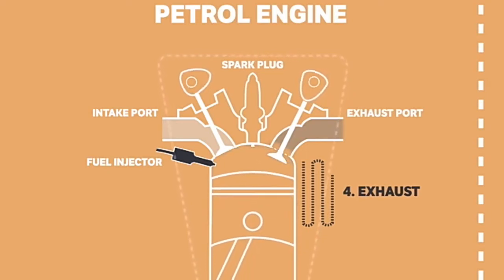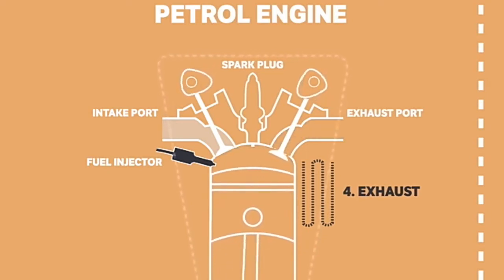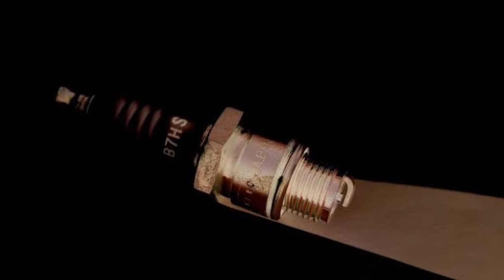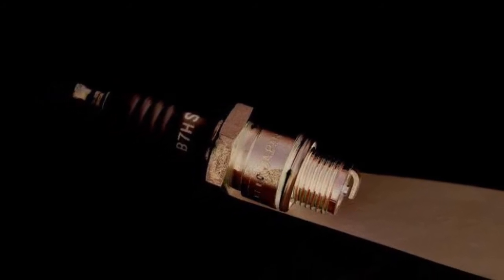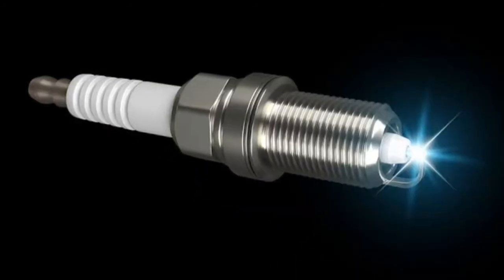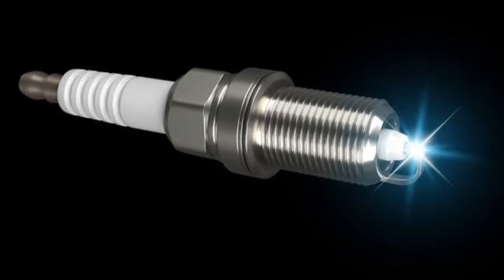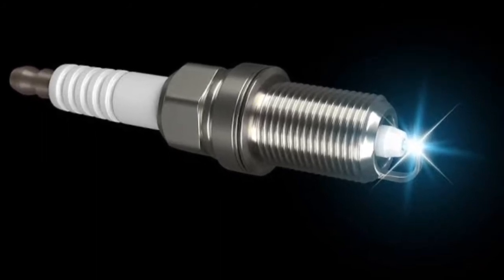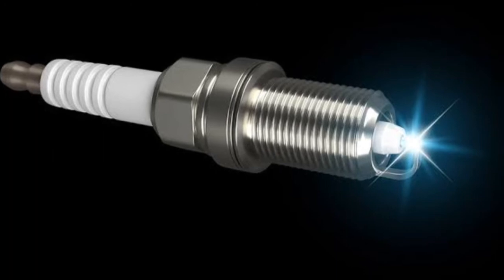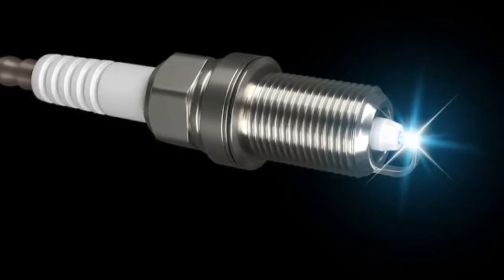After combustion we will have the exhaust stroke. So in an SI engine, the spark plug is responsible for creating the flame front. This single flame front, created between the electrodes of the spark plug due to the electric spark, has to propagate all over the mixture to complete the combustion process.